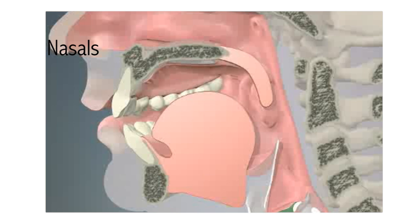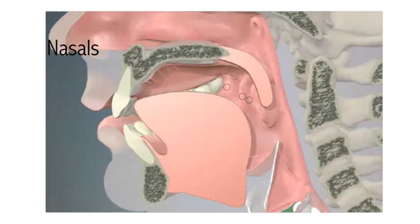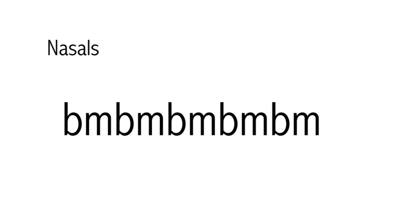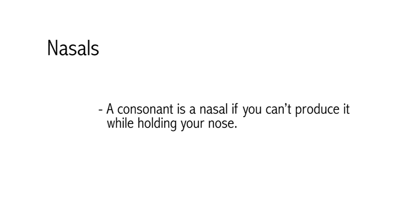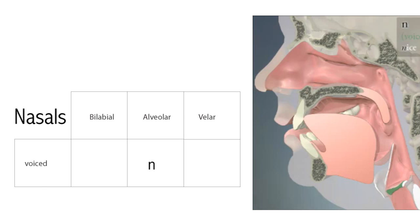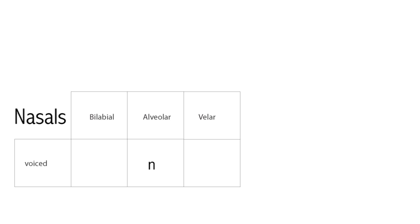Nasals. Nasals are like stops in that we make a complete blockage in the mouth. But instead of releasing the blockage to let air out through the mouth, we keep the blockage in place but lower our velum to let the air escape through the nose. Try keeping your lips closed and saying 'boom boom boom' — you can feel your velum going up and down, blocking the nasal passage and then opening to let air out through your nose. A consonant is a nasal if you can't produce it while holding your nose. English has nasals at the same places of articulation as the stops. Nasals are always voiced in English. M is a bilabial nasal. N is an alveolar nasal. NG — the final sound in 'sing' — is a velar nasal.